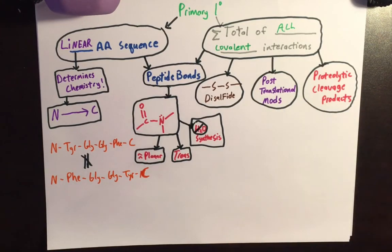And then lastly, proteolytic cleavage products. So let's say you have an enzyme that cuts up a certain protein. Well, the individual fragments of that protein that were cut up by that enzyme would be considered primary level protein structure.